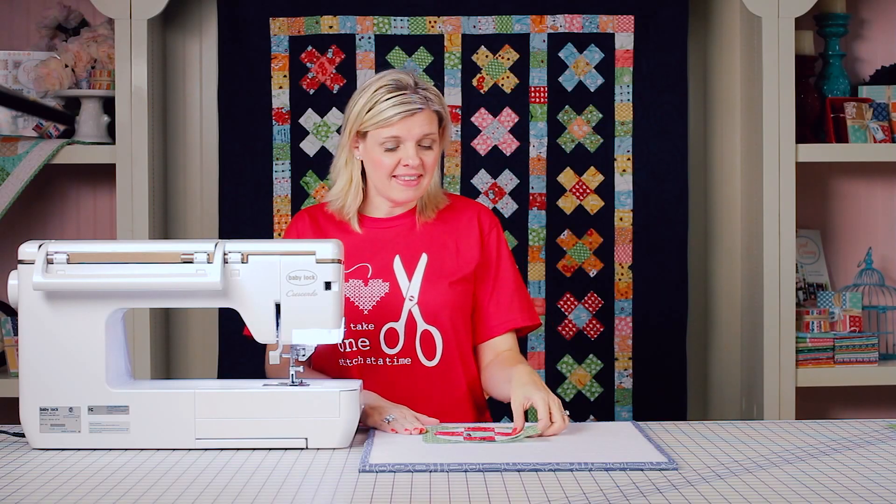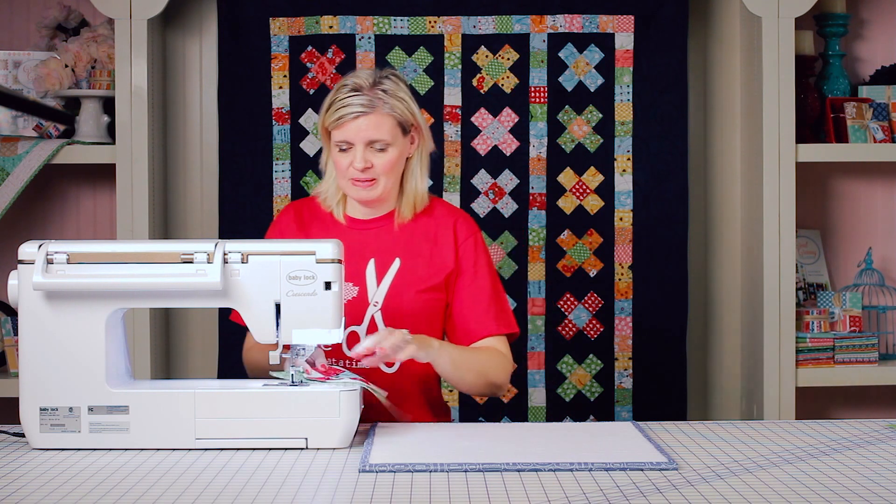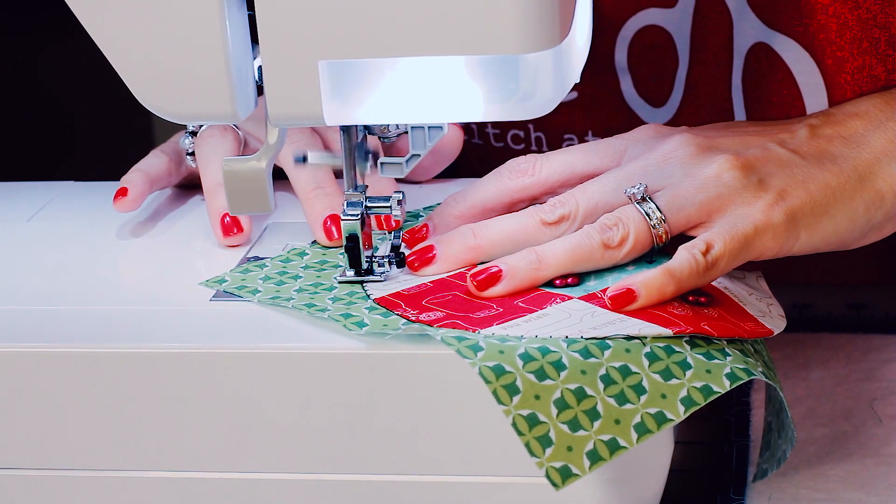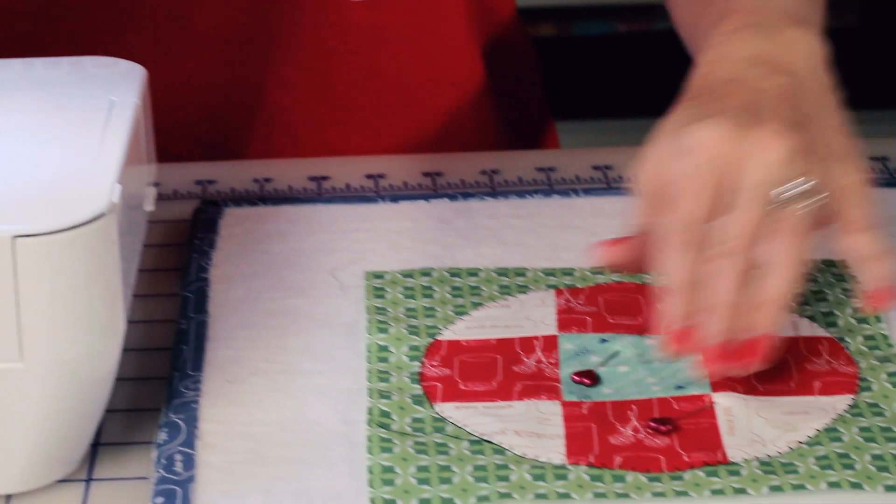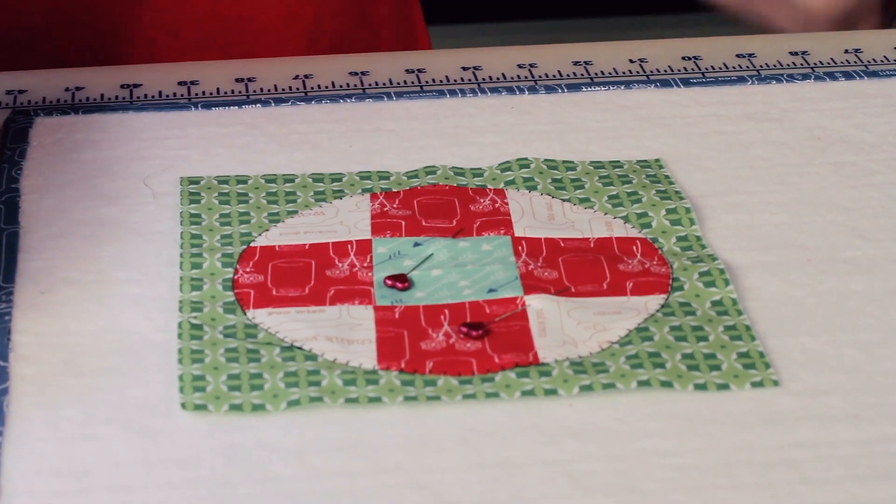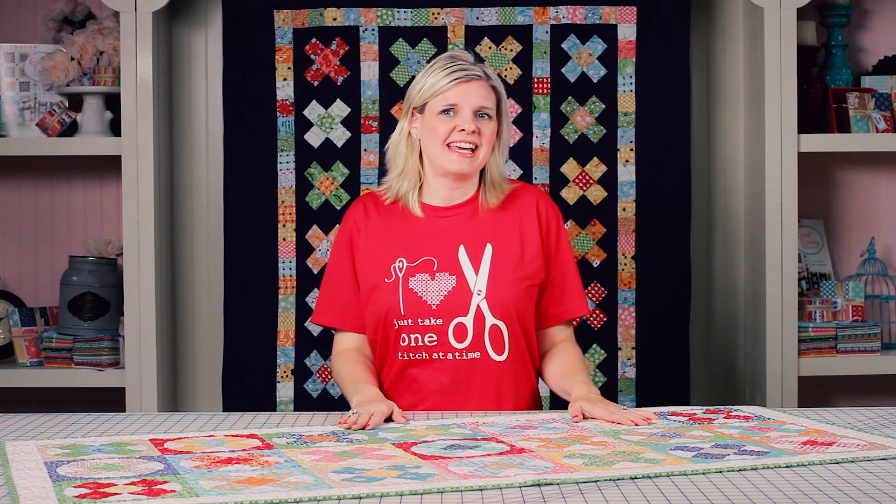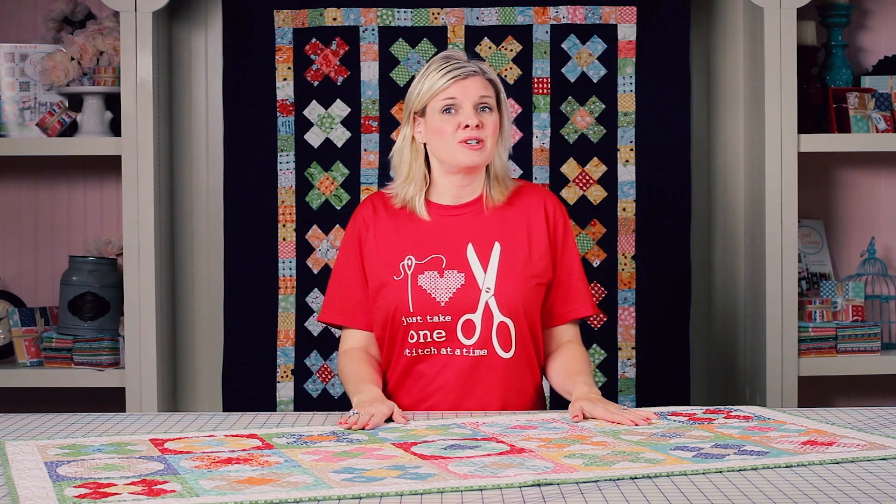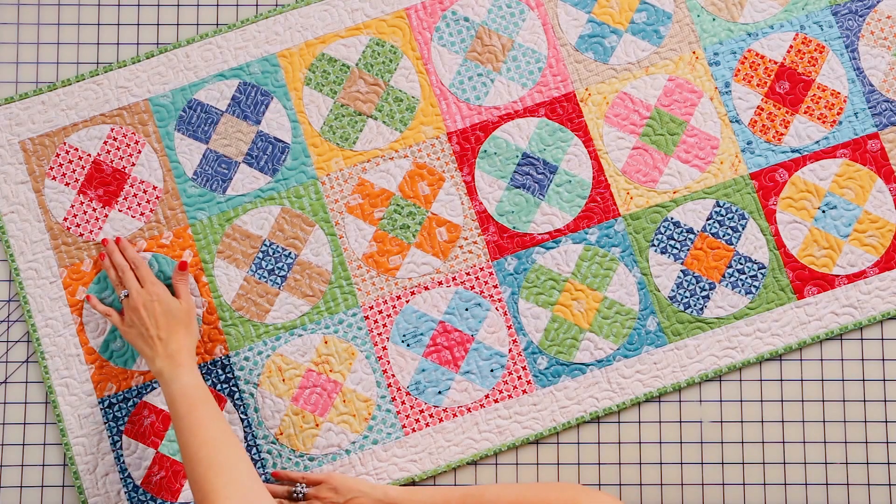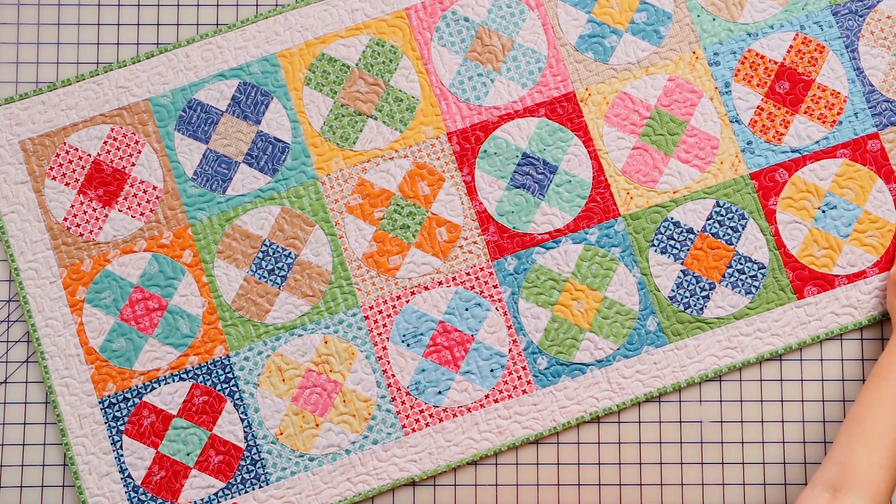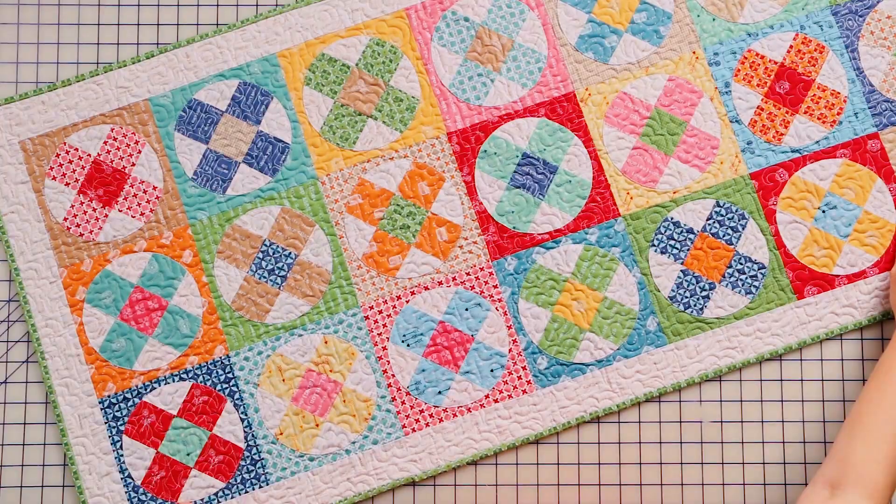Now we're going to applique this down with a small blanket stitch. I hope you loved learning Lori Holt's technique today, and if you want to make the table runner just like hers, you're going to set 3 blocks by 7 blocks and add a 2-inch finish border. Thanks for watching.